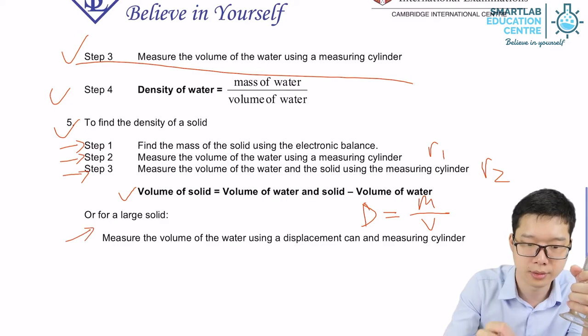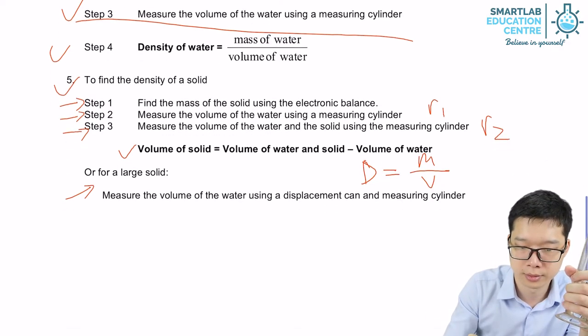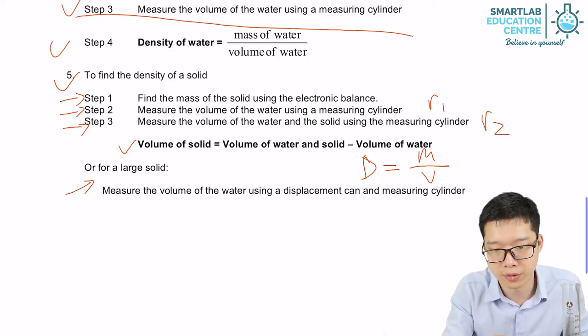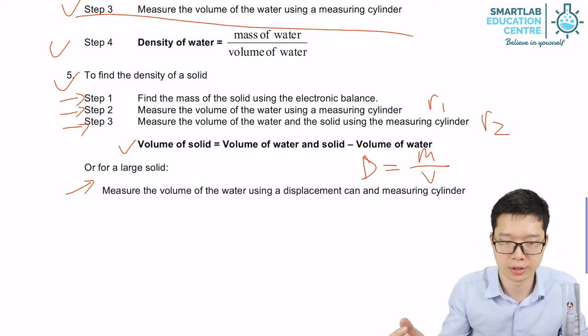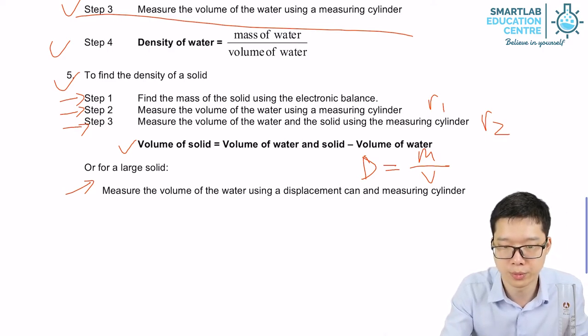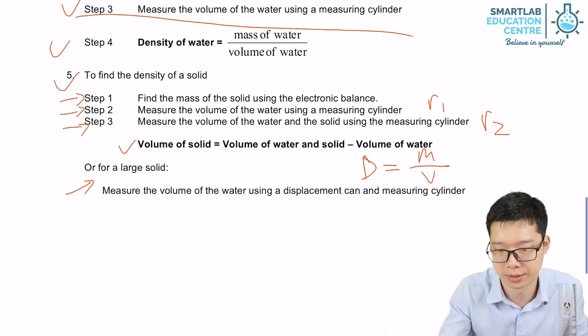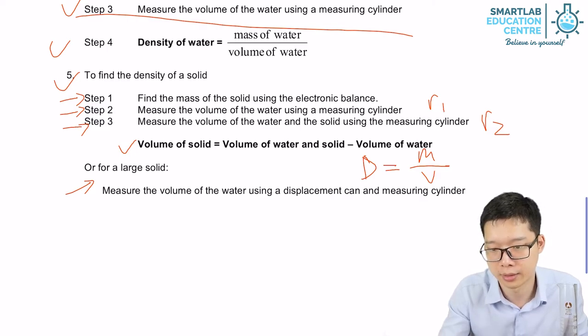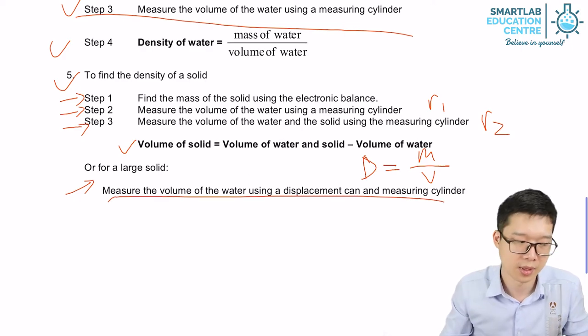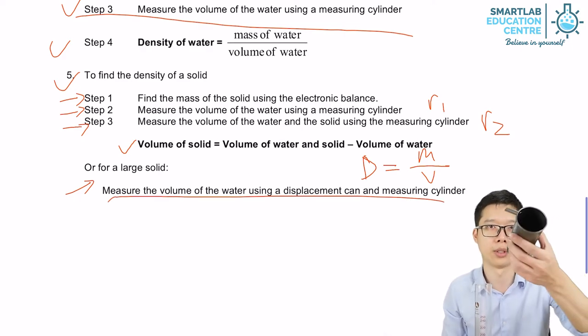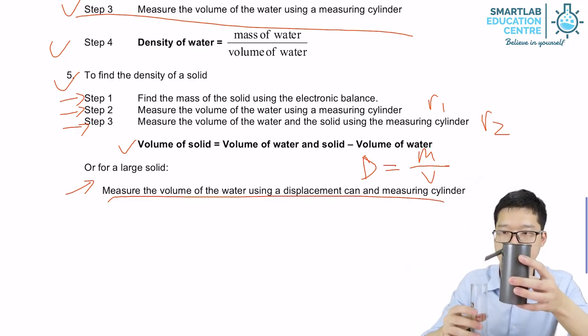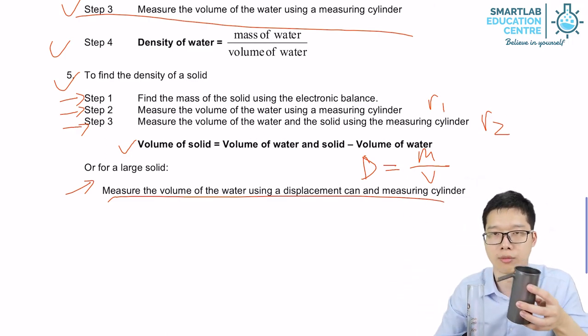Okay, here's another point to take away. If the volume of solid is very large, then how? We can measure the volume of the water using this displacement can and measuring cylinder. This whole sentence actually means we are using our Eureka can fill with water, drop the solid in, and the water will flow out into our measuring cylinder.